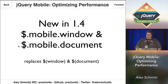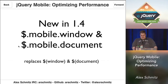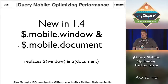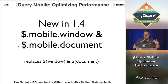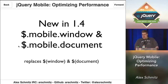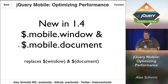Also in 1.4, we've added some conveniences: $.mobile.window and $.mobile.document. These save references to the jQuery object for window and document. We found these were being used repeatedly when attaching event handlers because of our AJAX navigation system — you're always binding them on the document — so this way you're not actually running jQuery each time.